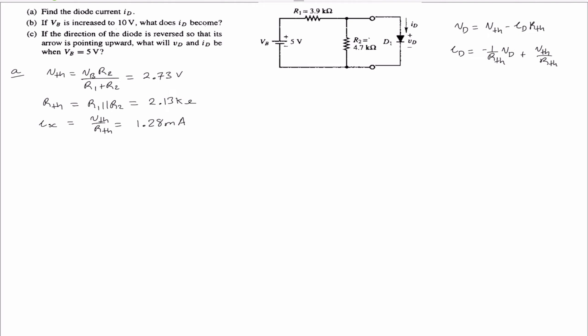Let's find Id for section A. Id is equal to Vthevenin minus Vd, all over Rthevenin, and that is equal to approximately 0.00099, which is approximately 1 milliampere. And that is Id.